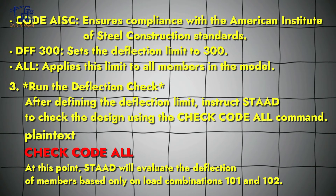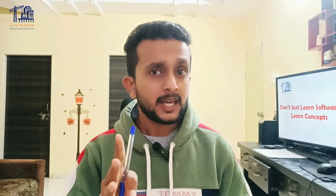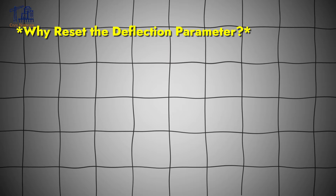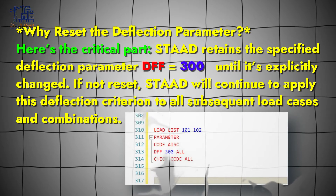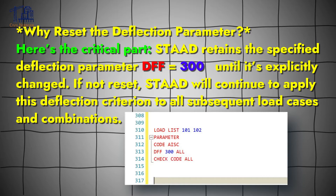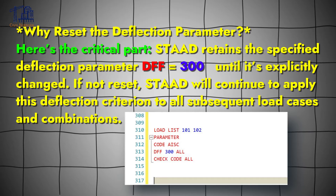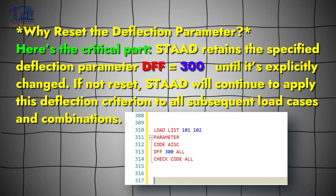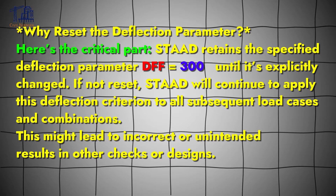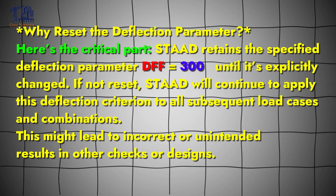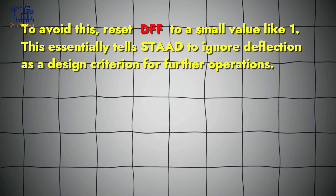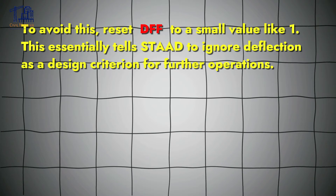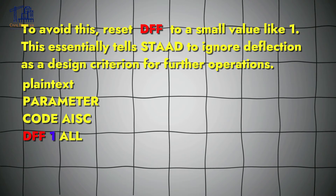Here is the catch: you can reset this deflection parameter. Why reset it? STAAD retains the specified deflection parameter until it is explicitly changed. If it is not reset, STAAD will continue to apply this deflection criteria to all subsequent load cases and combinations, which might lead to incorrect or unintended results in other checks or designs. To avoid this, you can utilize the RESET DFF option with a small value, which tells STAAD to ignore deflection as a design criteria for further operations.